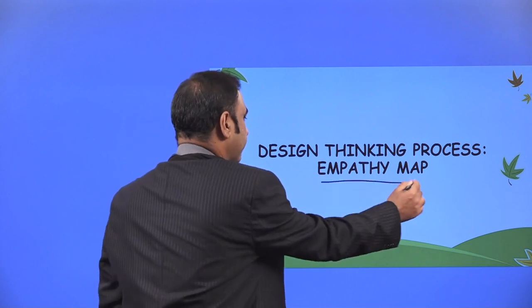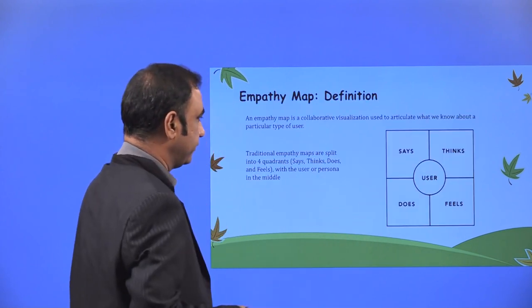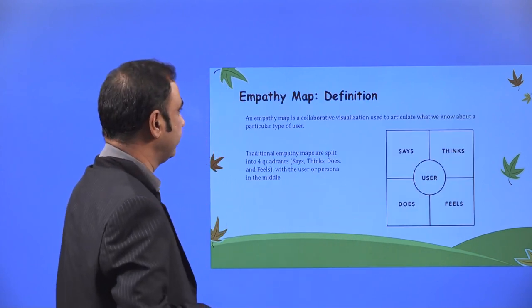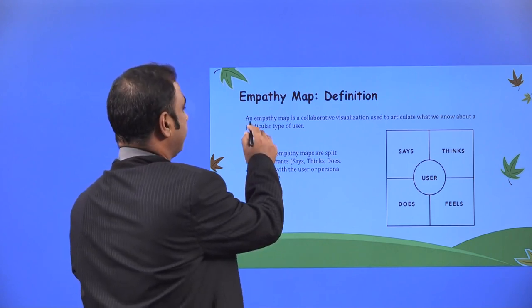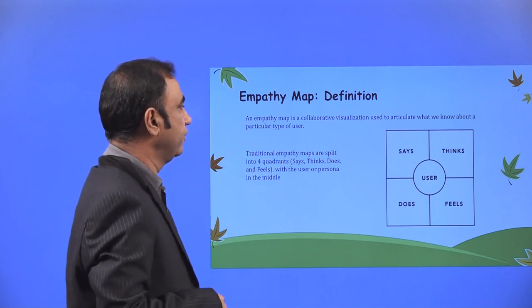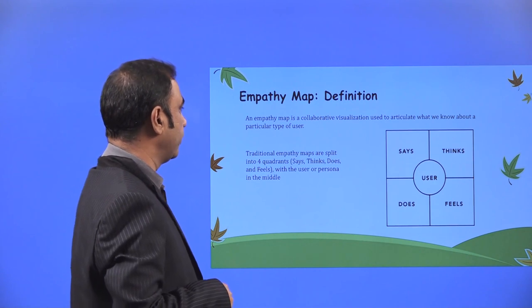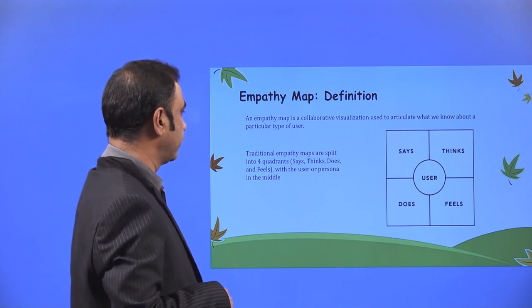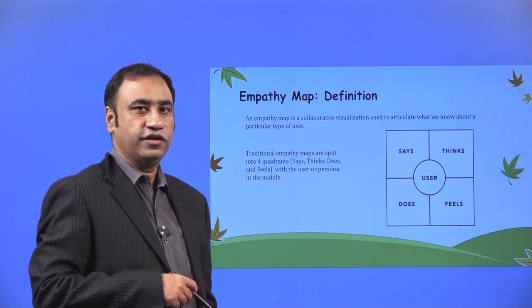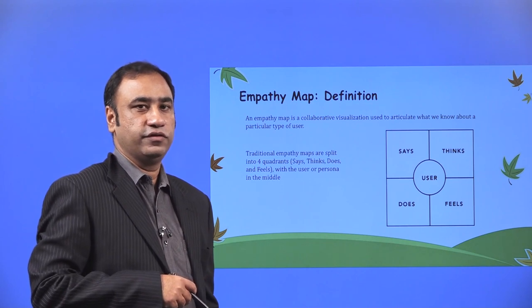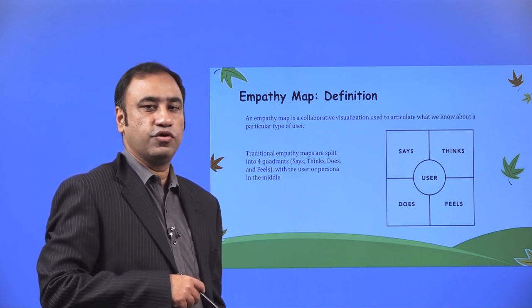Empathy map. We will be learning about the empathy map. What is an empathy map? An empathy map is a collaborative visualization tool used to articulate what we know about a particular type of user. We are understanding the user — at this stage of the process, we understand more about the user.